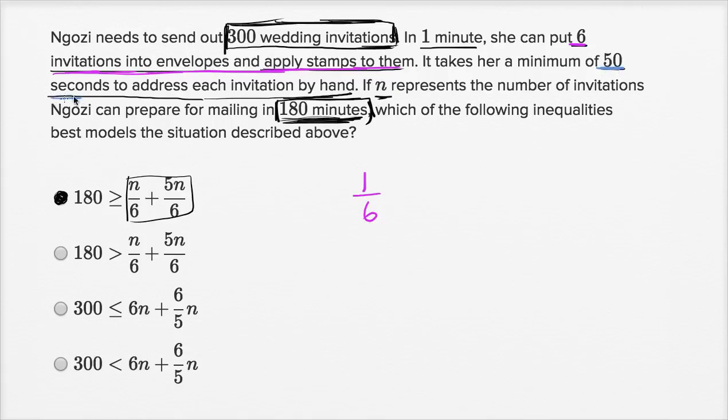And then how much time will she spend writing the address? Well, she's going to spend 50 seconds to write the address for any one invitation. But if it's in terms of minutes, that's 50 out of 60 seconds in a minute. So we could write this plus five-sixths of a minute. And I'm really tempted to add these because they add up to one, but it doesn't look like they added them over here, so I'm going to keep them like this. So this is how much time, in minutes, she would spend on any one invitation.